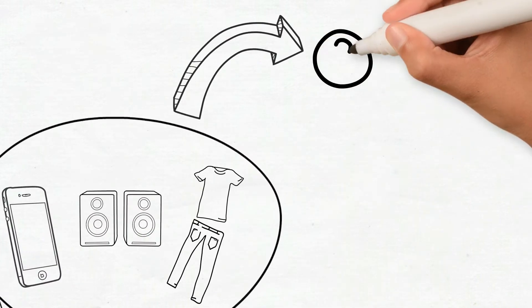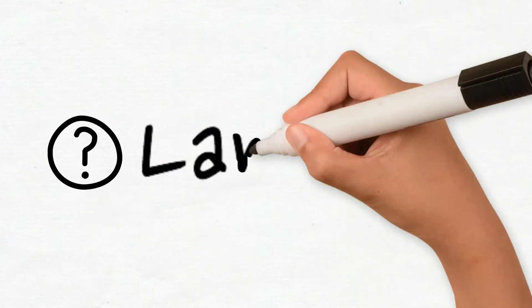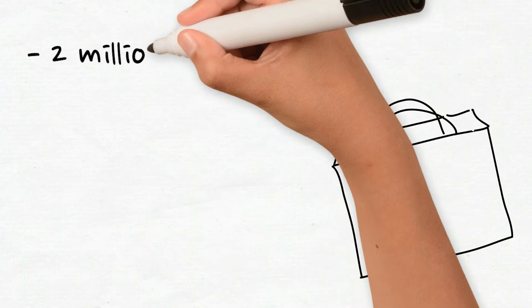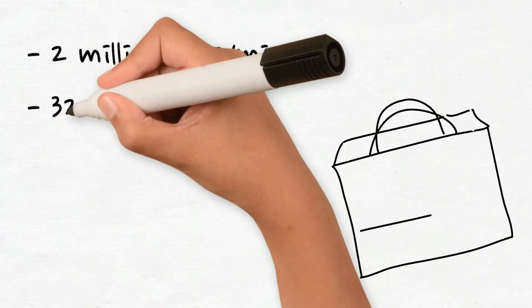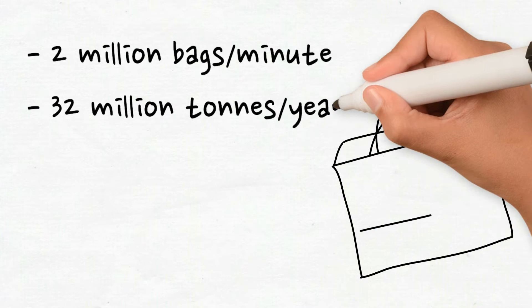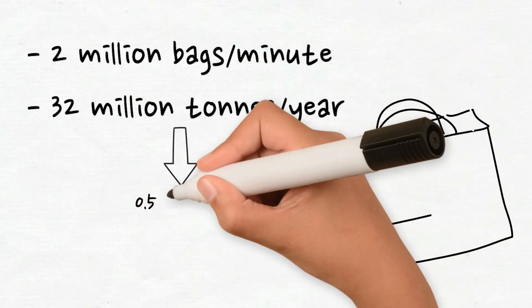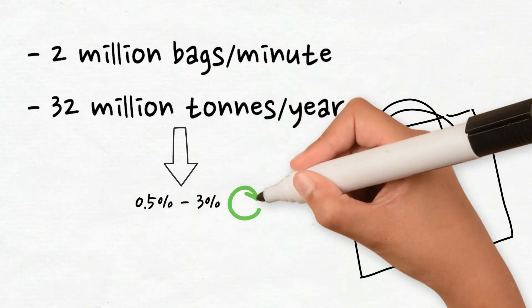But where do these old things go? Landfills. About 2 million plastic bags are used around the world every minute. 32 million tons of plastic waste is generated annually, of which only 0.5-3% is actually being recycled.